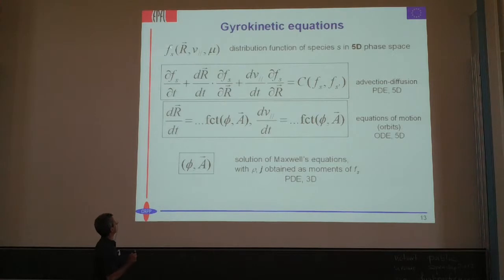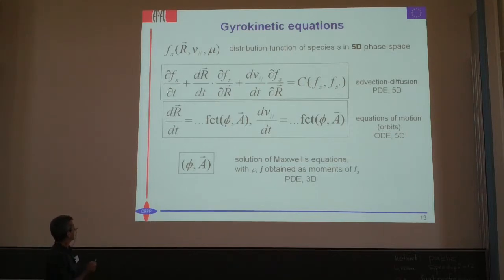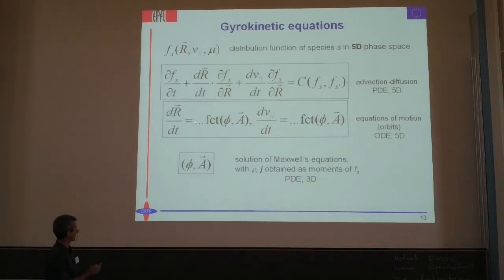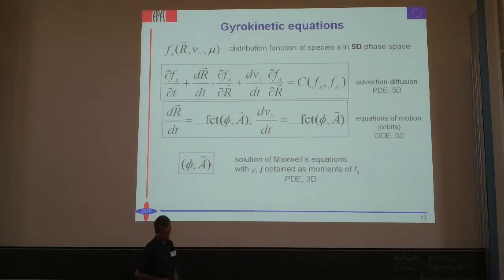We describe a 5D system using a distribution function for each species — ion or electron — as a function of position, parallel velocity, and magnetic moment representing the perpendicular velocity. So we have to solve for this distribution function in five dimensions. The basic equation is a convection-diffusion PDE in 5D, where the terms dr/dt and dv/dt depend on the electromagnetic fields. We need to solve these equations of motion — ordinary differential equations in this five-dimensional space — and we need to solve the fields as solutions of Maxwell's equations, given by a set of PDEs in three dimensions.